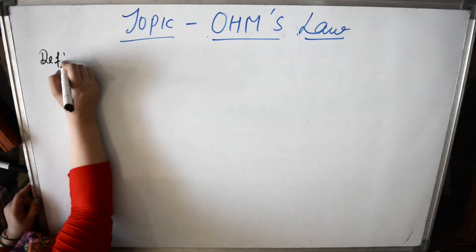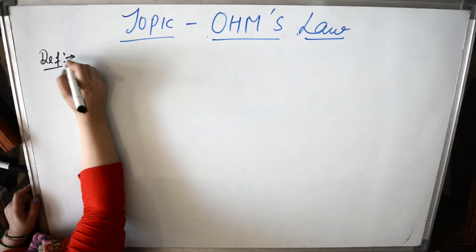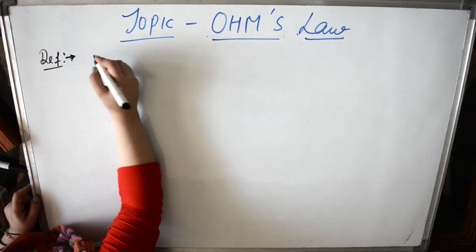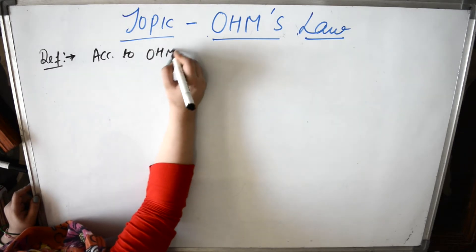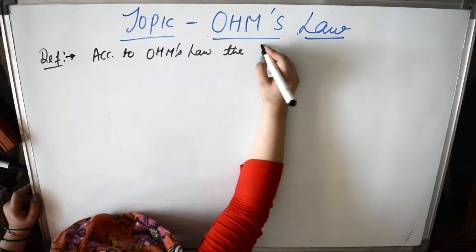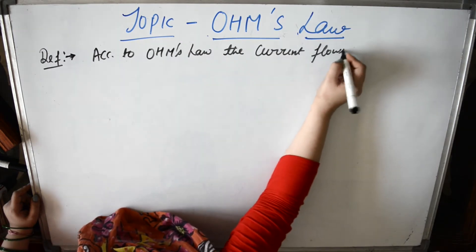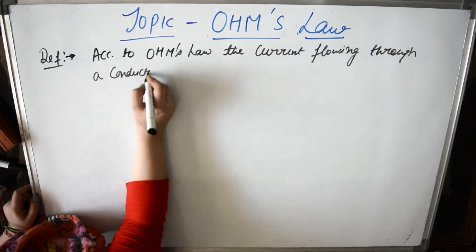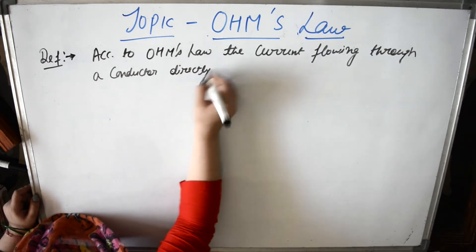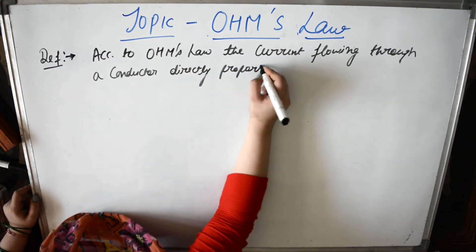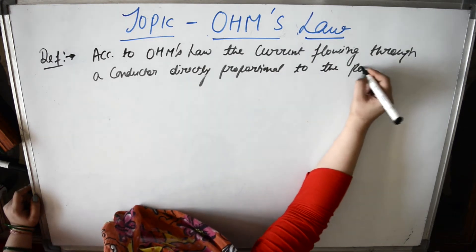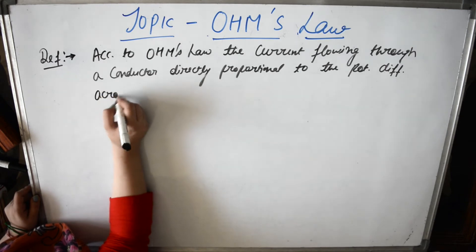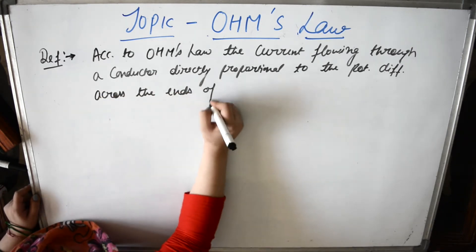If we study the definition of Ohm's Law — according to Ohm's Law, the current flowing through a conductor depends directly proportional to the potential difference, or voltage, across the ends of that conductor.